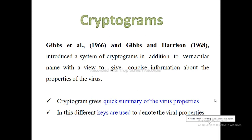Hello viewers, in this video we are going to understand about Cryptograms. Cryptograms is a concise system that gives you precise information about viruses. We have vernacular names and different nomenclature systems for viruses, but Cryptograms is a key that gives you information about properties of the viruses — a quick summary of viral properties, where keys are used to denote different viral properties.